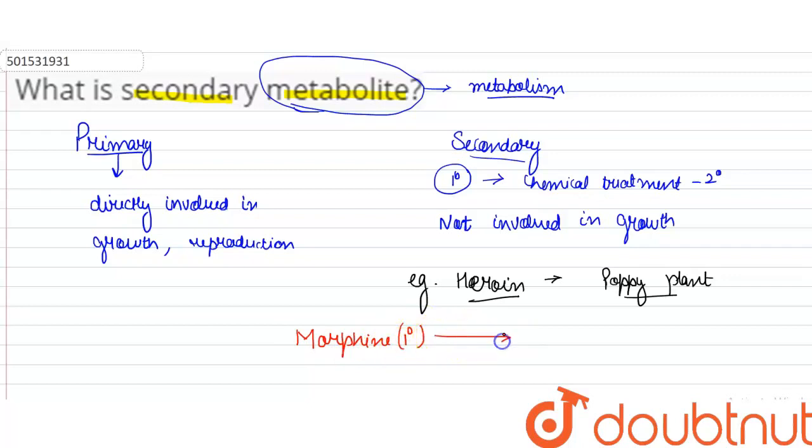If we add acetylation to morphine, it becomes heroine. What are morphine and heroine? Both are analgesics, meaning pain relievers. And both are addictive, meaning if a person takes them, they will depend on them.